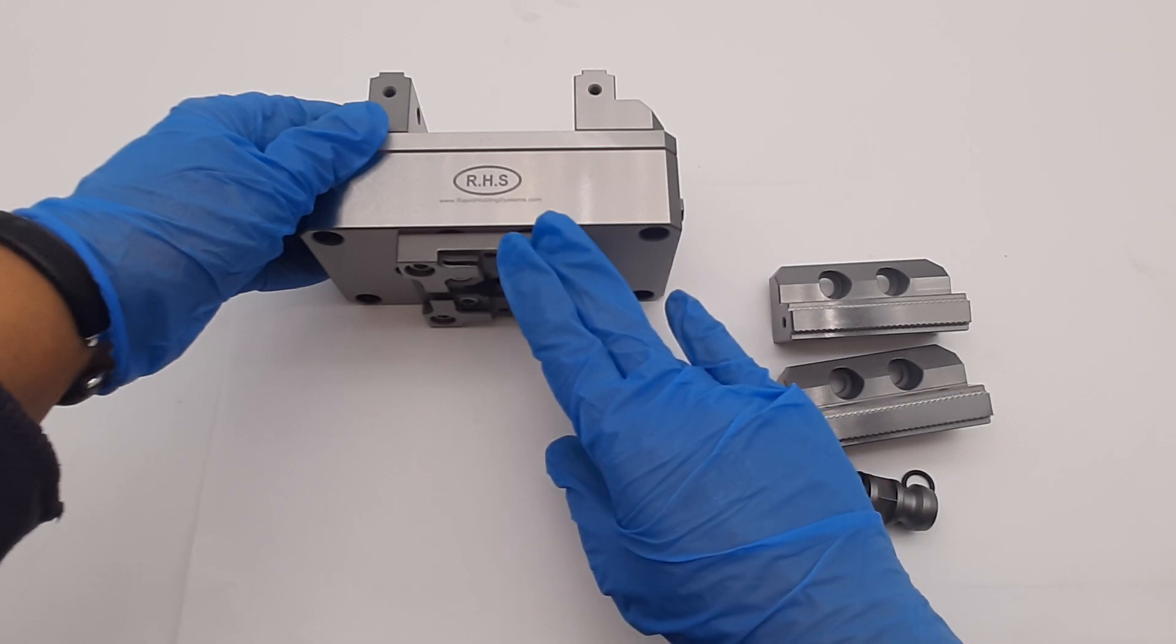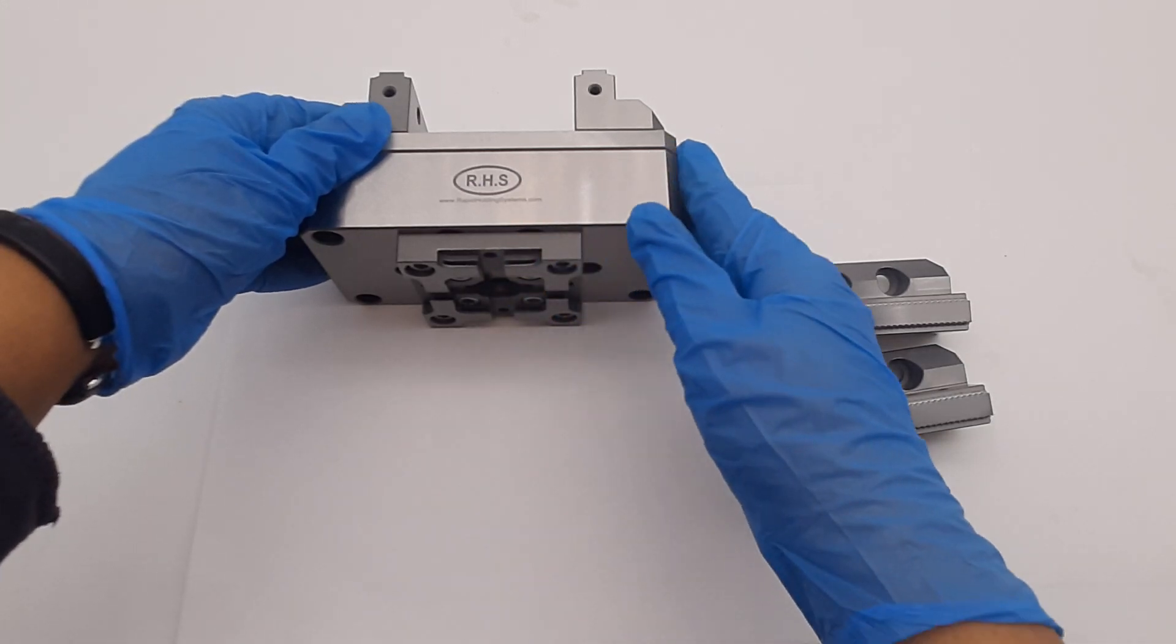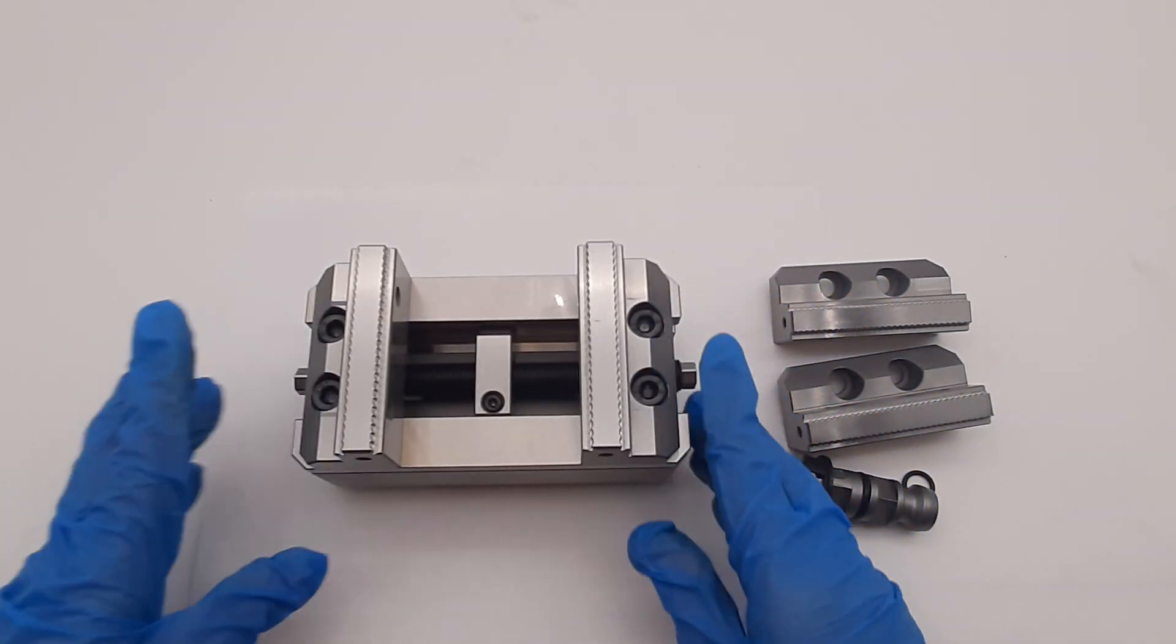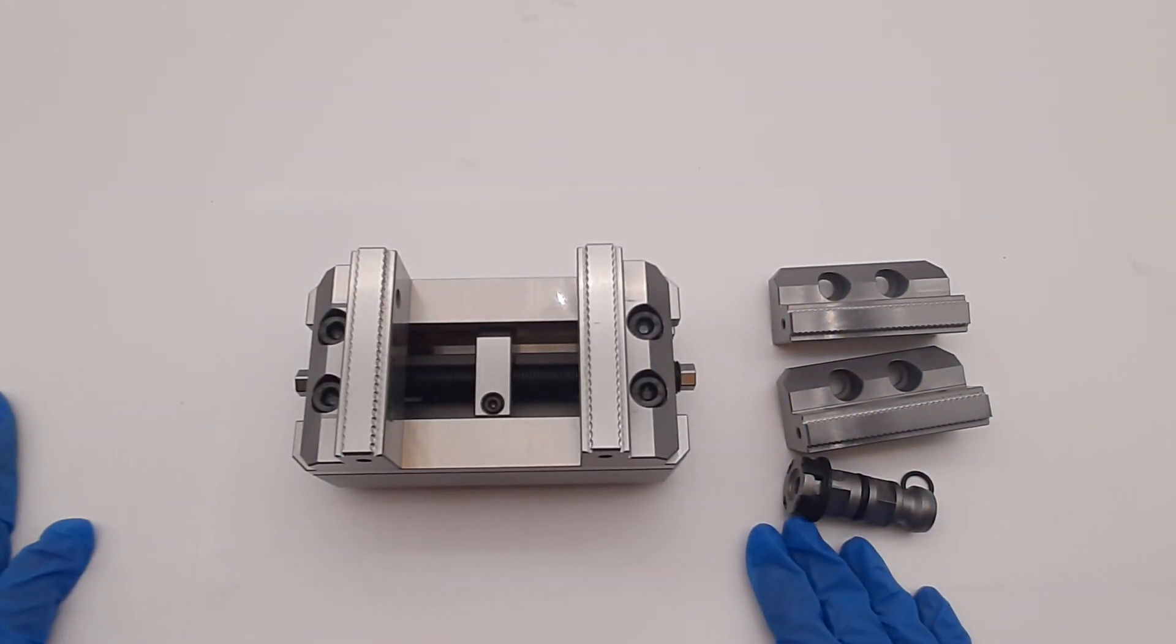Another version is Erowa compatible that can be pre-mounted on all kinds of Erowa plates. The third one is without base plates if you want to mount these kinds of vises directly on your machine tables.